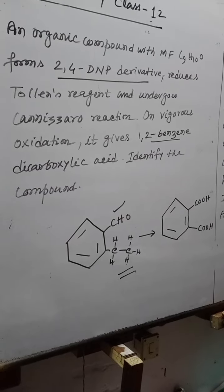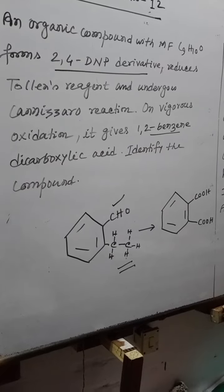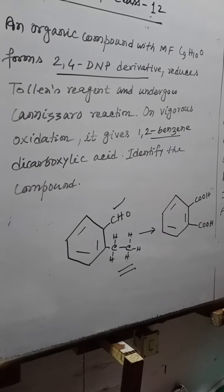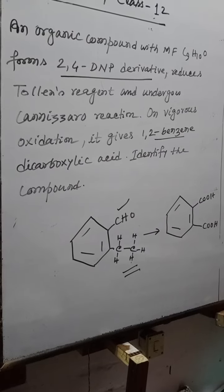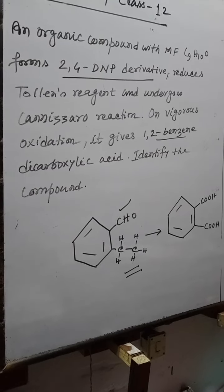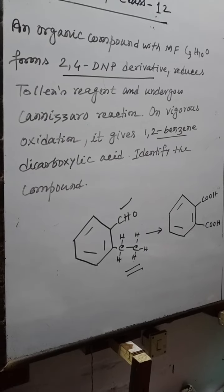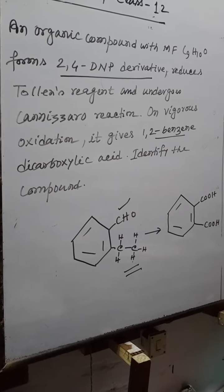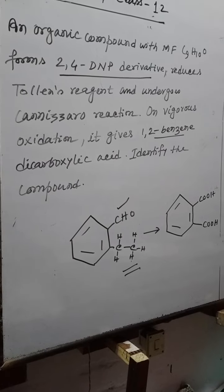The 2,4-DNP derivative test indicates the compound contains a carbonyl group (ketone or aldehyde). Since it also reduces Tollens' reagent, that means it will be an aldehyde.